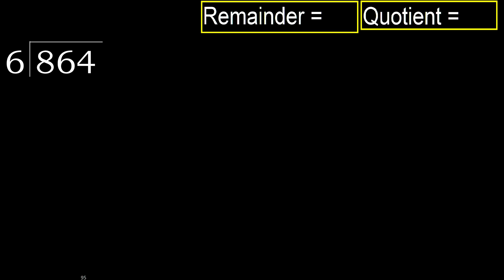864 divided by 6. 8 is not less, therefore start with 8. 6 multiplied by which number is nearest to 8 but not greater? 6 multiplied by 2 is 12, which is greater. Multiplied by 1, 6 is not greater. Subtract: 8 minus 6 equals 2.